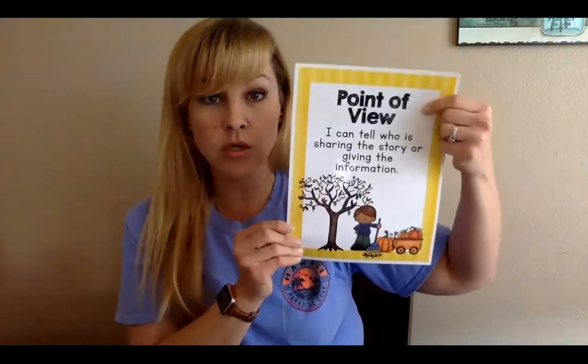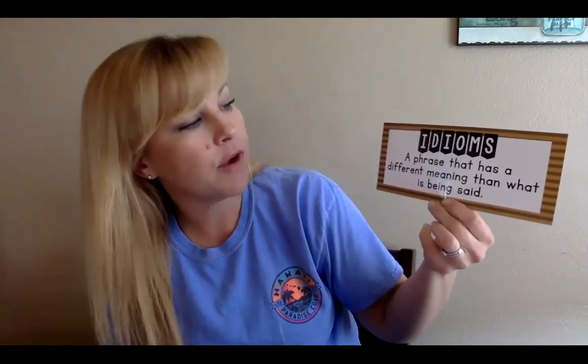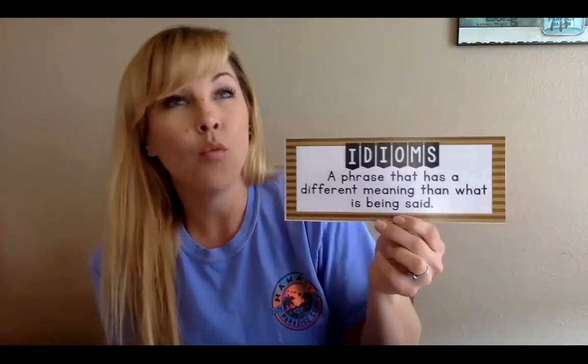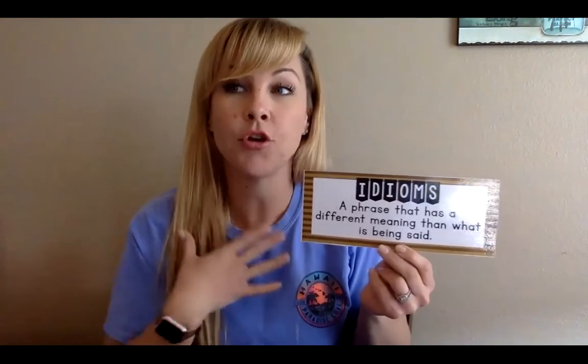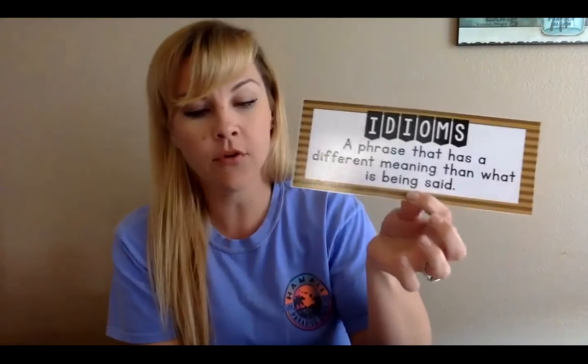Our vocabulary strategy is idioms. An idiom is a phrase that has a different meaning than what is literally being said — it's like a silly sentence with a meaning behind it. For example, if I said 'I'm so hungry I could eat a horse,' I can't physically eat a horse, but it means I'm extremely hungry. That's an idiom — an exaggeration used to tell someone how you're feeling. There were actually a couple in the story we'll get into shortly.